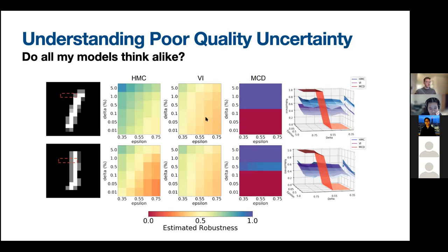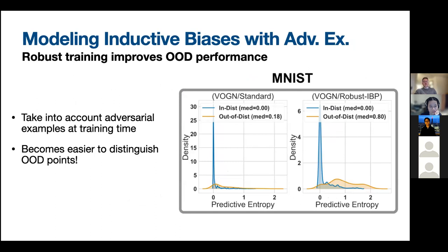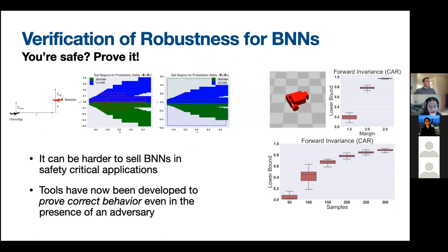Another benefit of robust training for Bayes is improved out-of-distribution performance. Plotting predictive entropy on MNIST versus Fashion-MNIST: without adversarial examples during training, out-of-distribution examples do have higher predictive entropy but the difference is limited. With robust training, we get a much more pronounced difference between out-of-distribution entropy and in-distribution entropy, making it much easier to distinguish when we're outside the training distribution — a very desirable property for Bayesian models.